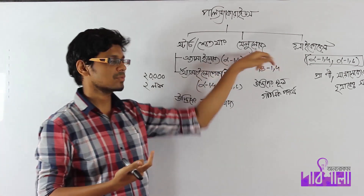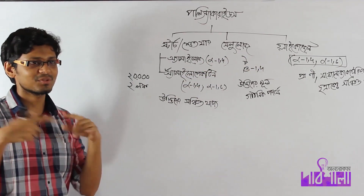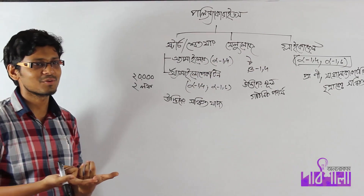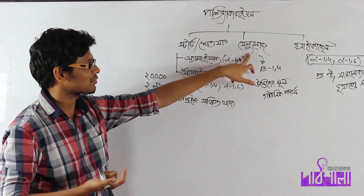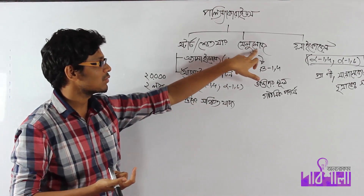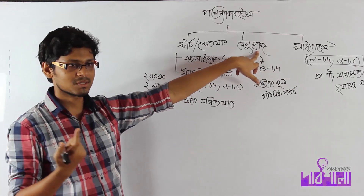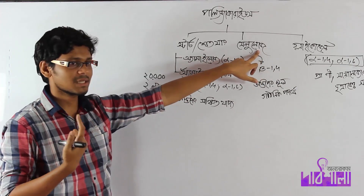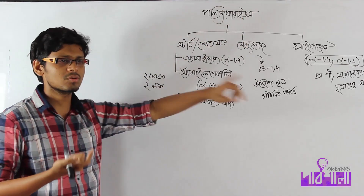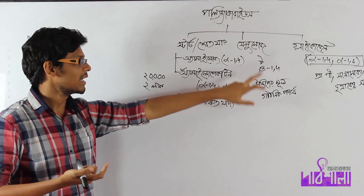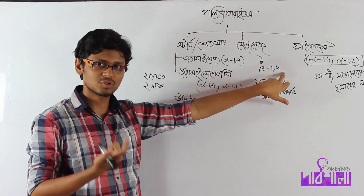Now let's talk about cellulose. Cellulose is also a polysaccharide made of glucose. The glucose units in cellulose are connected by beta-1,4-glycosidic bonds.